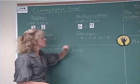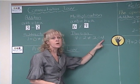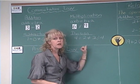Commutative law does not also work for division. 4 divided by 2 is 2, and that does not equal 2 divided by 4. 2 divided by 4 is 1 half.